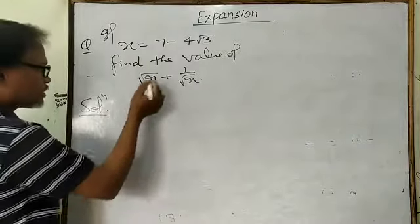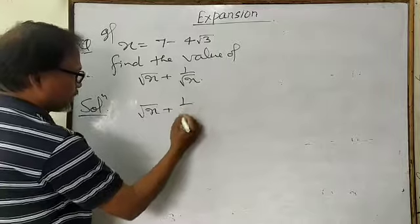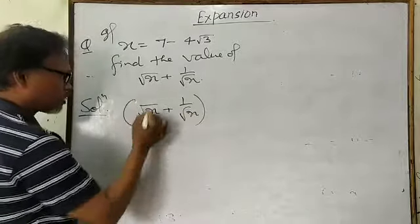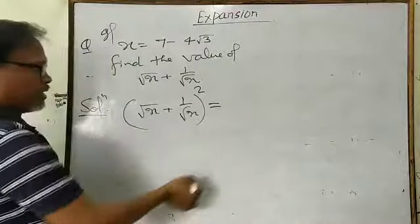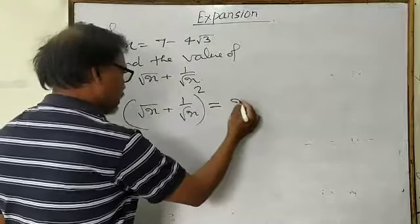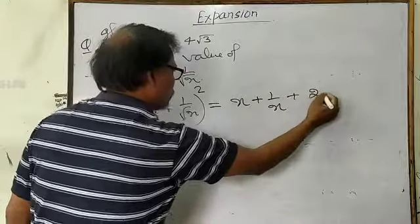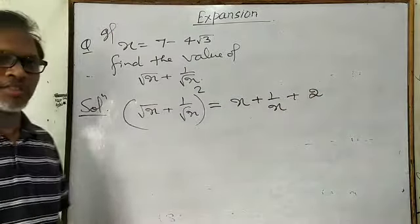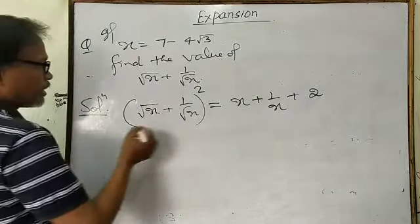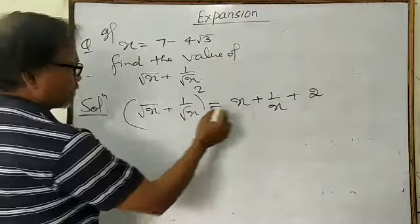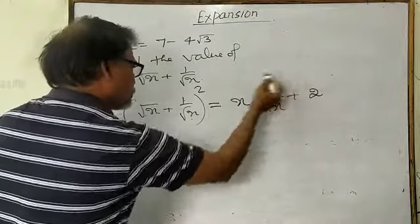For this, first you square — take the square of root x plus 1 upon root x. When you open or expand it, you will get x plus 1 upon x plus 2, by using the formula for x plus 1 upon x whole square.